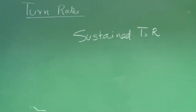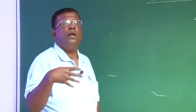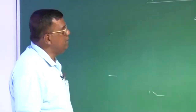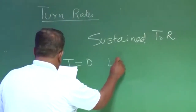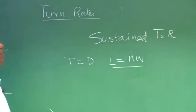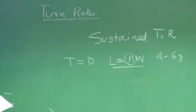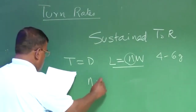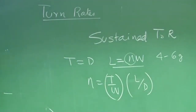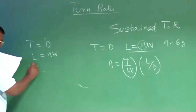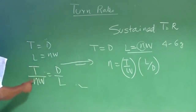In sustained turn rate, the aircraft must turn while maintaining constant speed and altitude. Thrust plays an important role — this is critical for a combat scenario. You need to generate enough lift to achieve a particular load factor, which could be 4 to 6 g or 8 g depending on the mission. From the equilibrium condition, since T equals D and lift equals N·W, we can write N = (T/W)·(L/D).